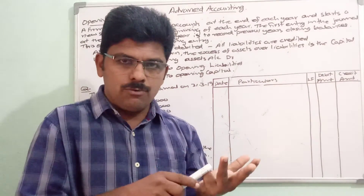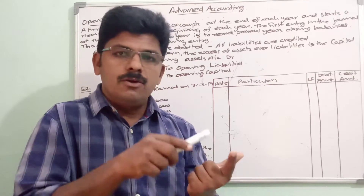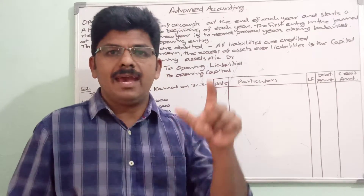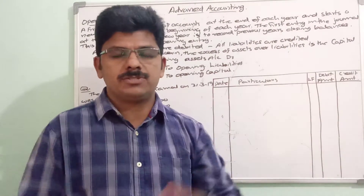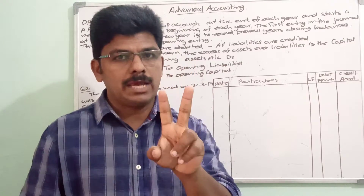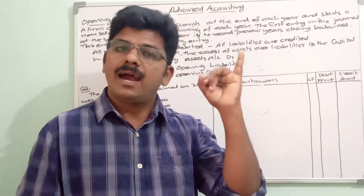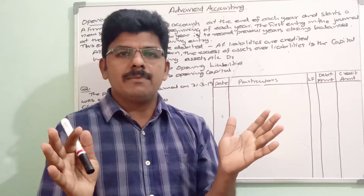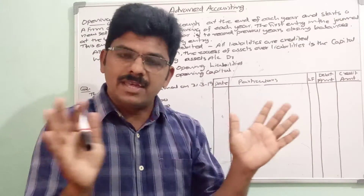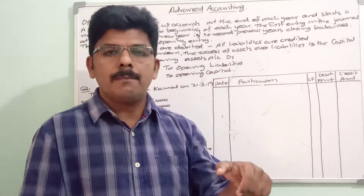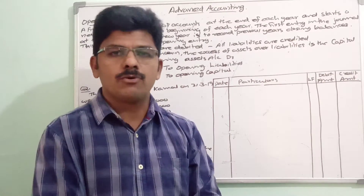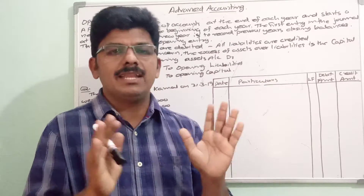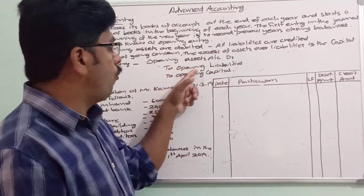Opening assets include: cash account, bank account, stock account, furniture account, land and building account, plant and machinery account — all assets are to be debited first. Then credit all liabilities. Liabilities are of two types: external liabilities, which are liabilities to creditors, banks and outside parties; and internal liabilities, which are liabilities towards the owners of the company. All liabilities are to be credited.